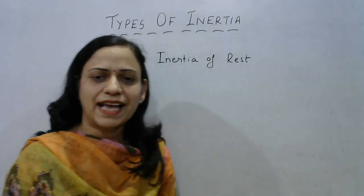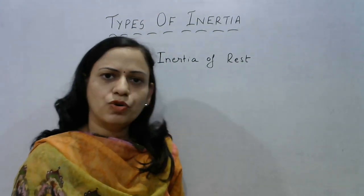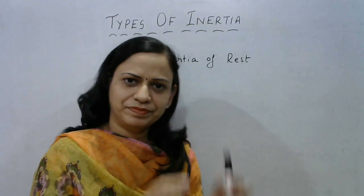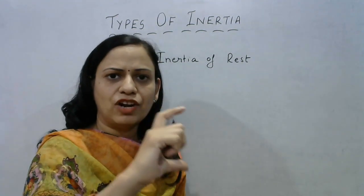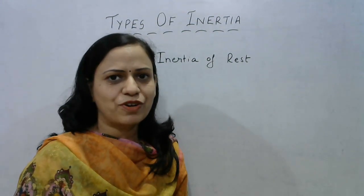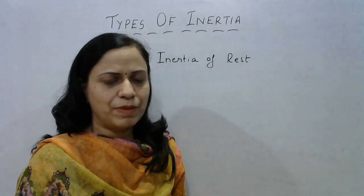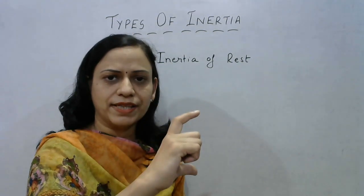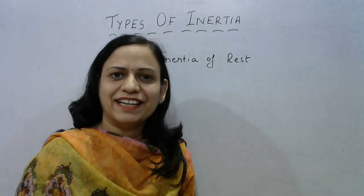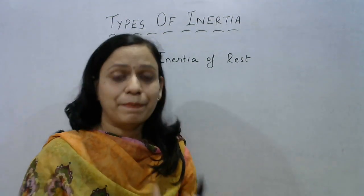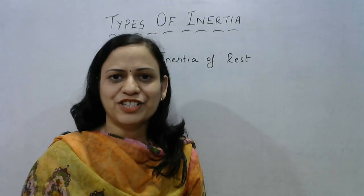Another common example: when you pile coins on a carom board and strike the lowermost coin, only that lowermost coin moves out while the upper pile of coins remains intact. This is because force was exerted only on the lower coin, so it came in motion, whereas the upper coins continued to be at rest because of inertia of rest — so the pile remained intact.